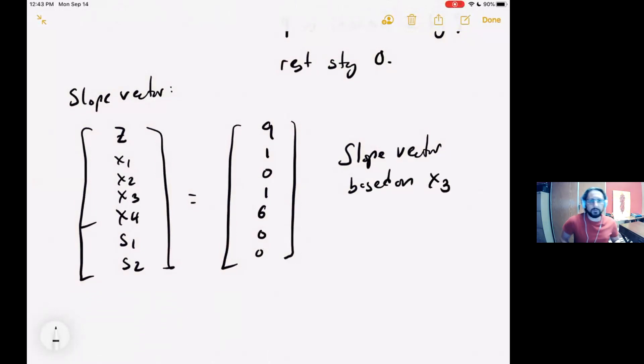This piece of information says increase x3 by 1 and all of the other variables change by the amount in the corresponding coefficient. So z increases by 9, x1 increases by 1, x4 increases by 6. So now that I have a slope, if I can include another point, I can write a linear equation that describes a direction of increase.